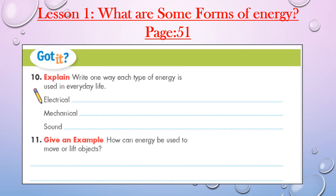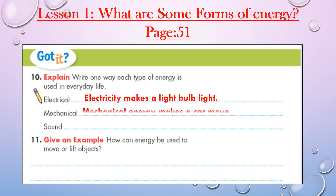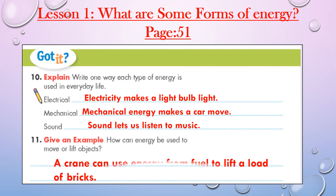Let's find the answers for questions 10 and 11 on textbook page 51. Question 10: write one way each type of energy is used in everyday life. Electrical: electricity makes a light bulb light. Mechanical: mechanical energy makes a car move. Sound: sound lets us listen to music. Question 11: how can energy be used to move or lift objects? A crane can use energy from fuel to lift a load of bricks.